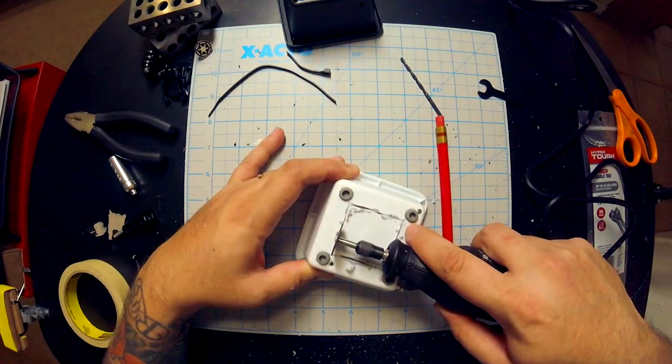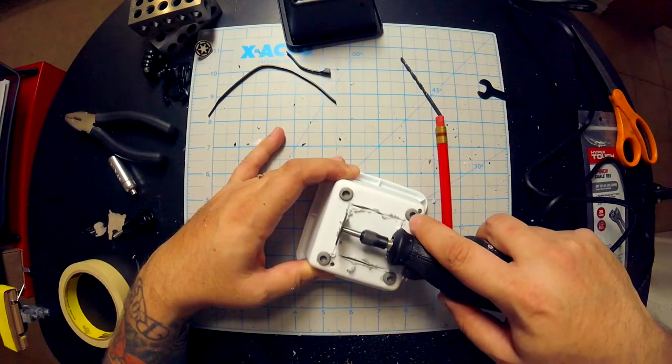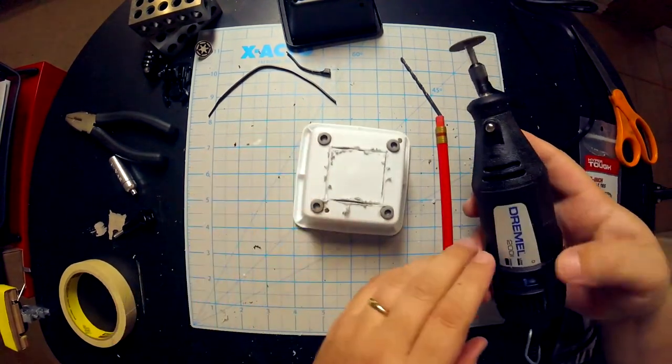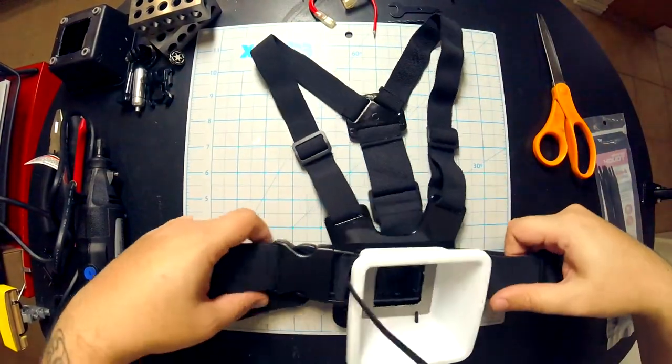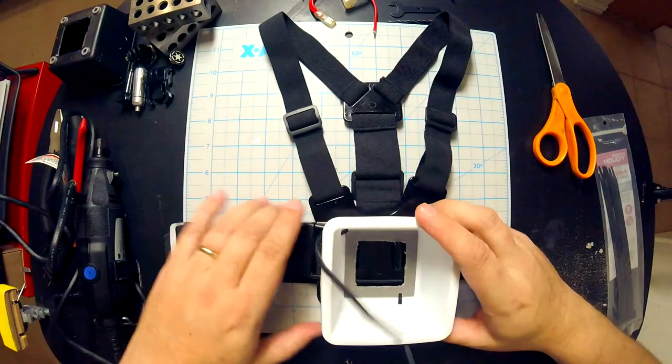I still need to add an attach point to the chest box, which brings us to what you're seeing on screen. My first thought was to glue a GoPro mount to the back and just call it a day, but thought it might be a bit too sticky-outy.